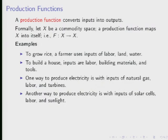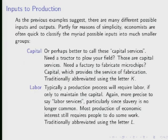We could spend a long time listing production functions, since there's a myriad of things produced around us. Instead, economists group inputs into two broad classes: capital and labor. Capital covers a vast array of things — a factory, a tractor, a hoe. The classical economists like David Ricardo had a third category, land, but as a formal matter we can treat land as just another form of capital.